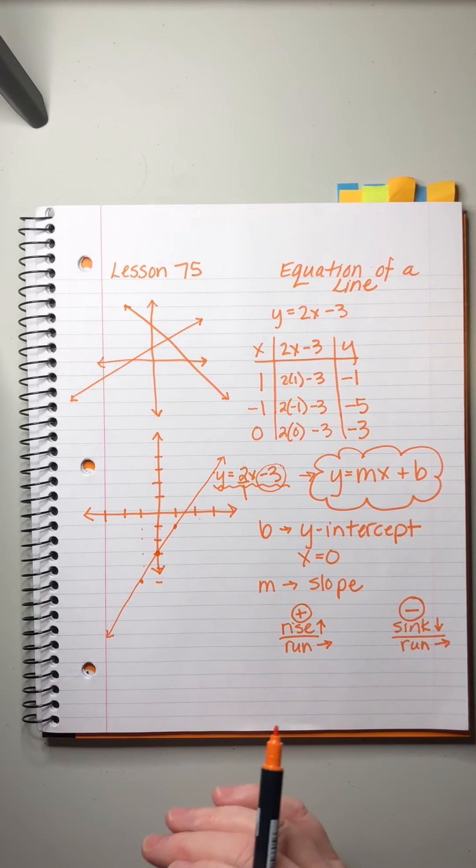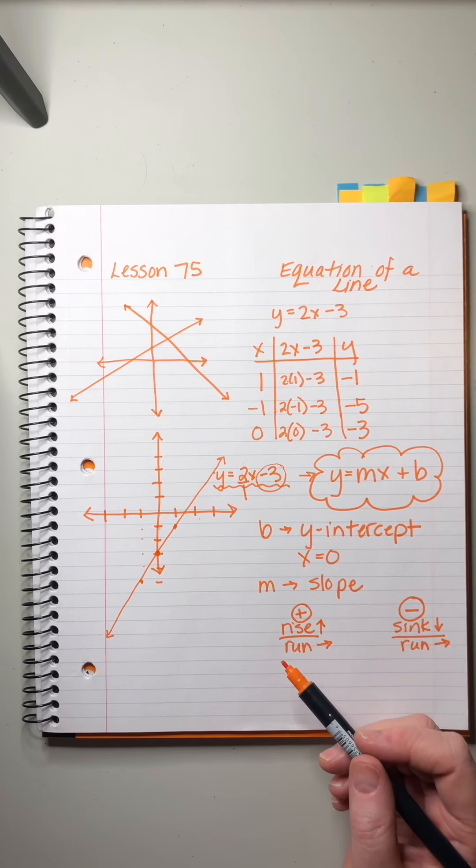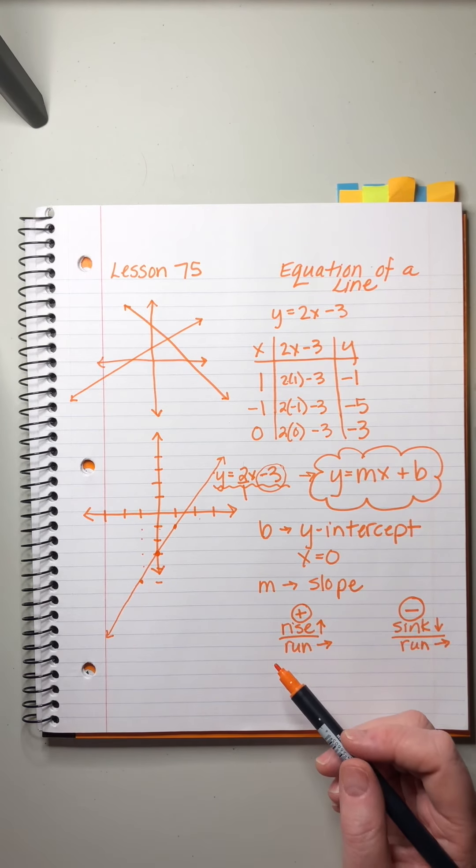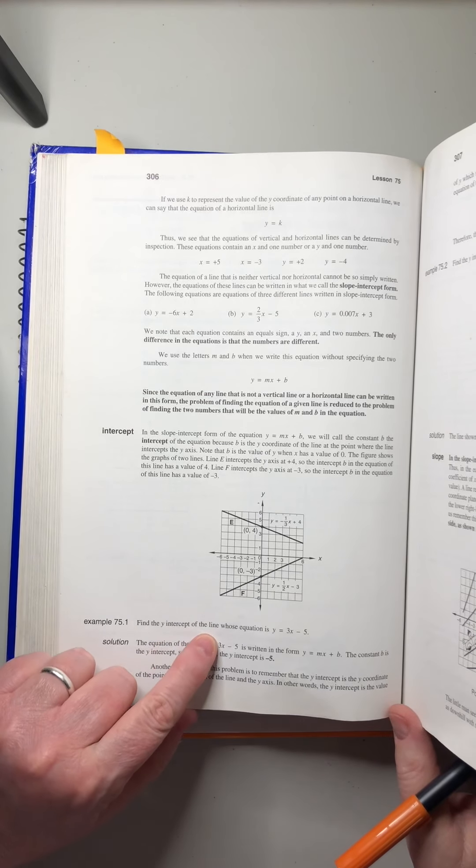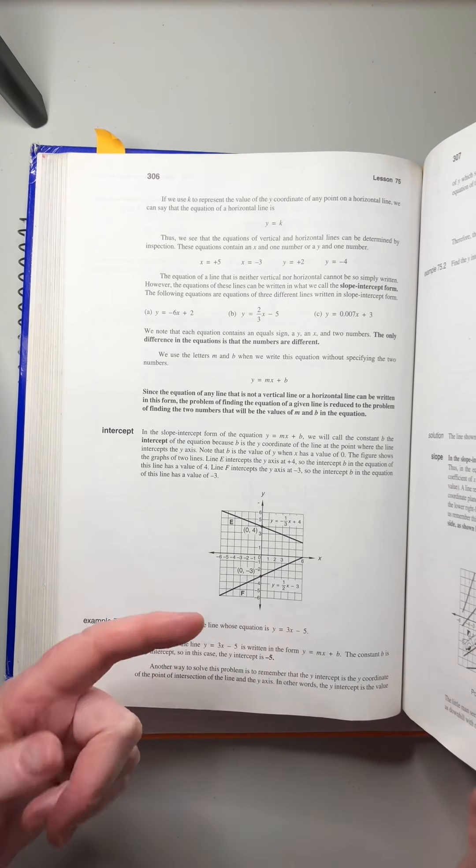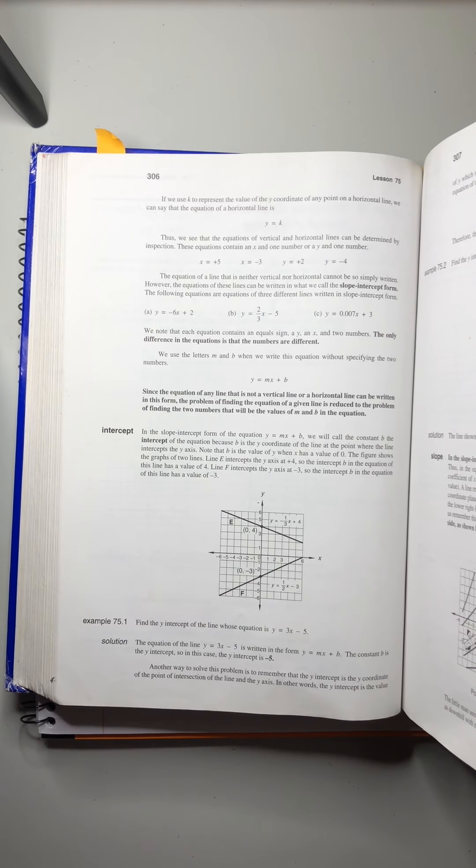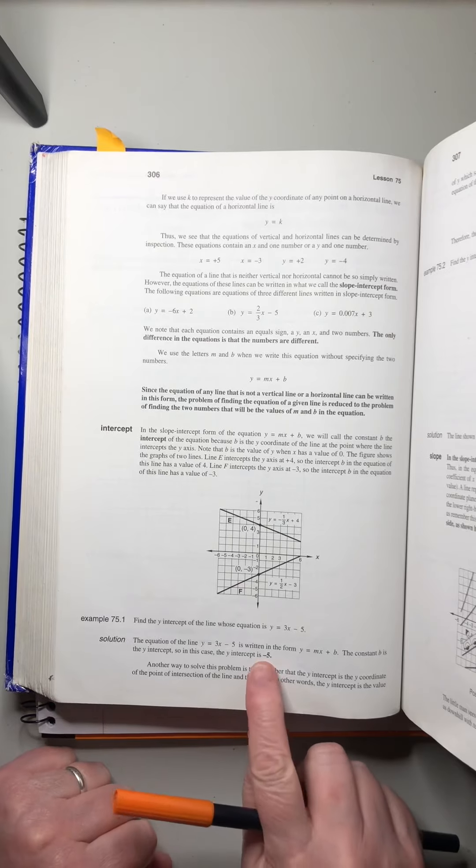So what this means, once again, is that we can use these rules to graph without drawing the chart. And the first two problems are so easy. Find the y-intercept of the line whose equation is y equals 3x minus 5. Well, we know the y-intercept is the part at the end, right? It's not the part by the x. It's the plain number hanging out. And the sign is a part of it. So this one is going to be negative 5. That's the right answer.